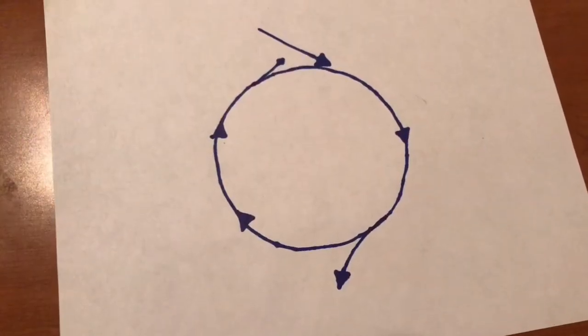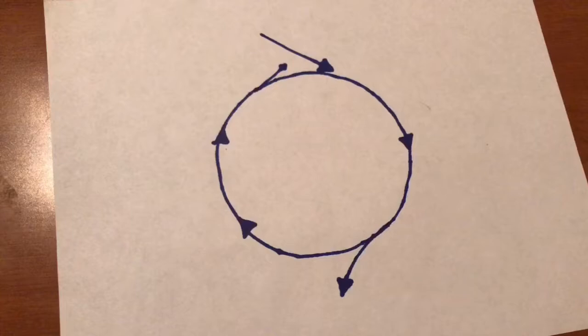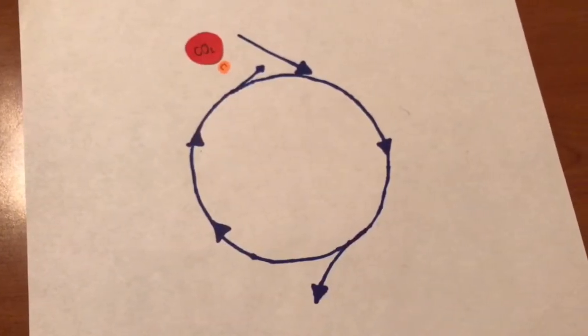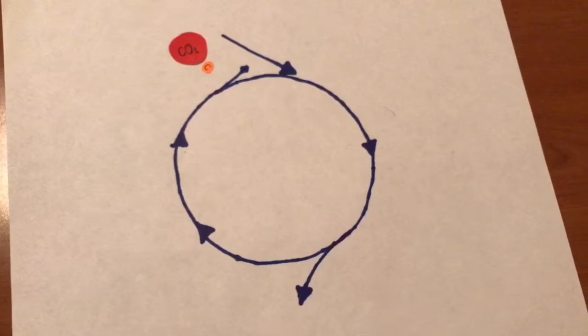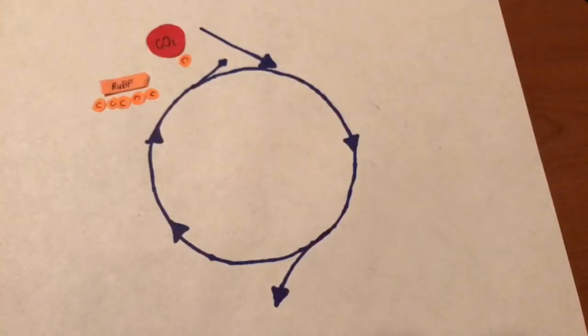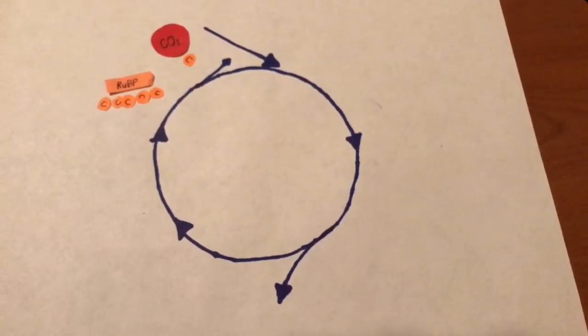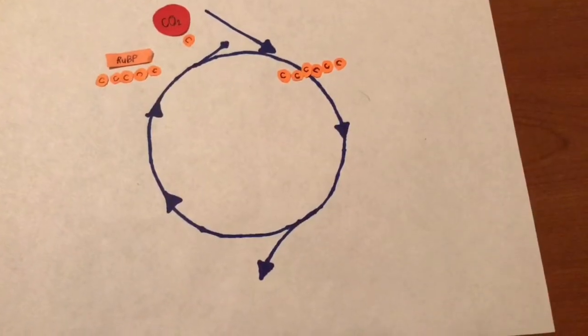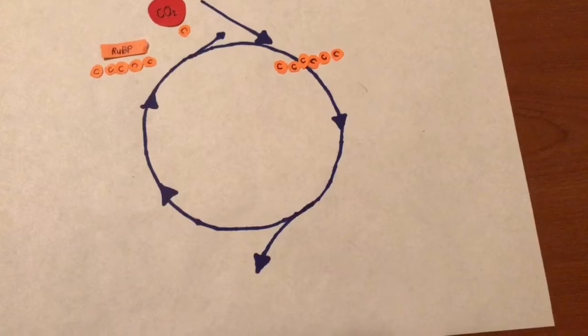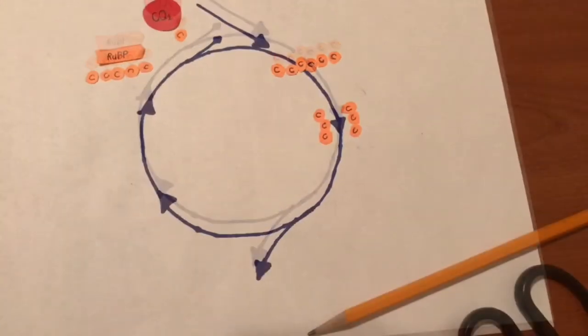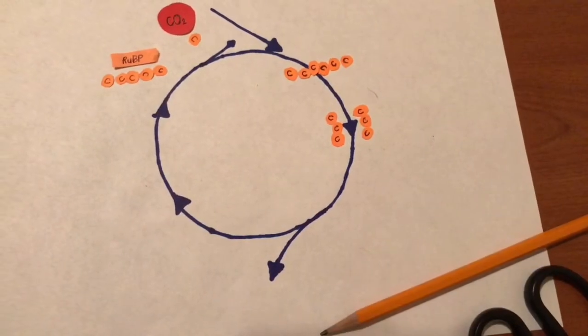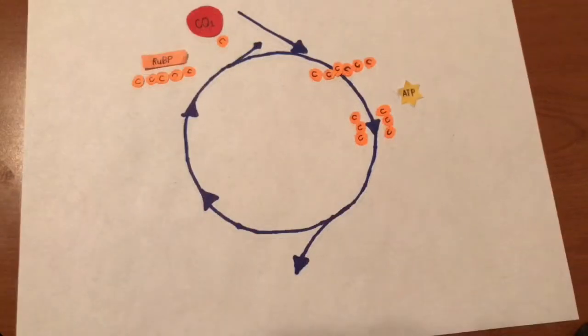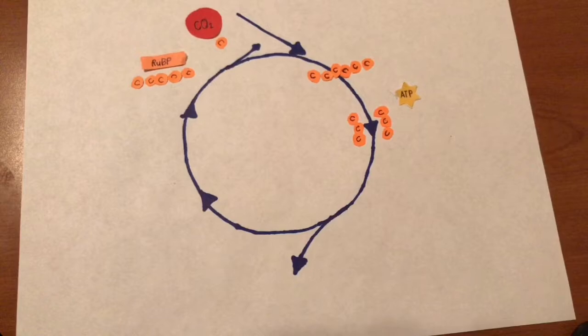Light Independent: Carbon dioxide is added to a 5-carbon molecule called RuBP. The resulting 6-carbon molecule is unstable and quickly splits into 3-PGA molecules, using energy from ATP and reducing power from NADPH, which are products of the light reaction.